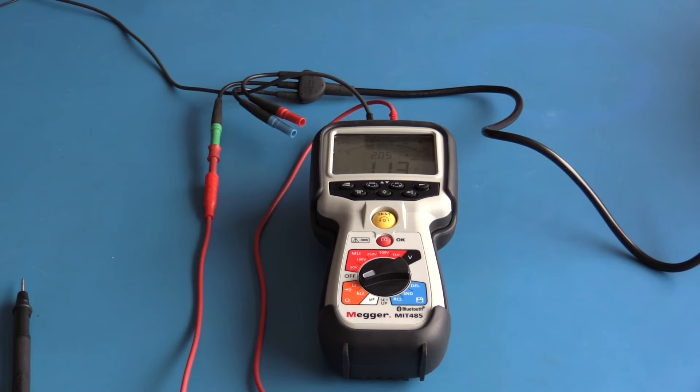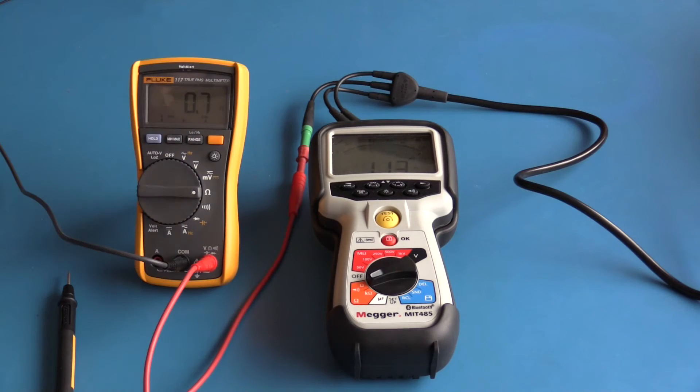With a test current of 205 milliamps, I'm getting a reading of approximately 1.1 ohms. The continuity beeper is also active. The same measurement on my Fluke 117 shows 0.7 ohms.